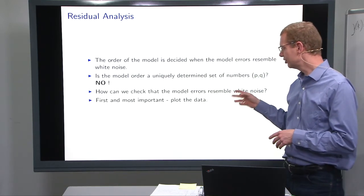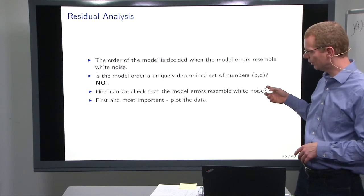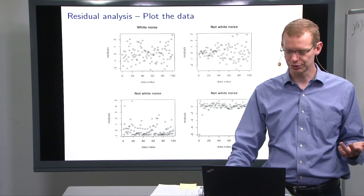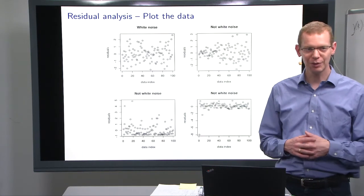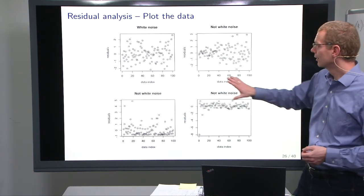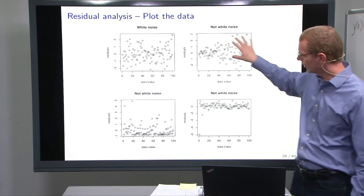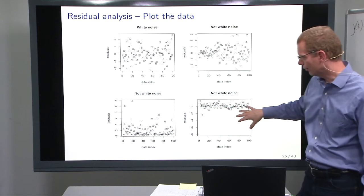How can we check that the model errors resemble white noise? First of all, plot the data, plot the residuals. Here are some examples where the first one, top left here, is white noise, and the other three are not white noise.